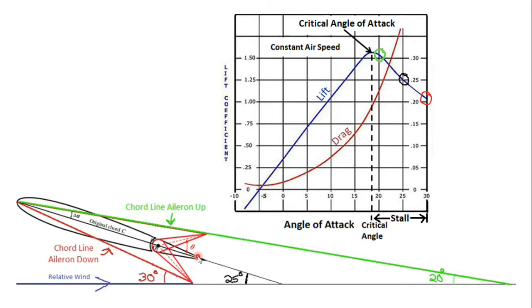The way that the ailerons change the angle of attack is by changing the chord line by changing the trailing edge. The chord line is a straight line from the leading edge of the wing to the trailing edge of the wing. The ailerons change where the trailing edge is, so that changes the chord line. The angle of attack is the angle between that chord line and the relative wind. So if you're changing the angle of the chord line, you're going to change the angle of attack.